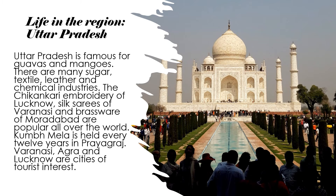Uttar Pradesh is famous for guavas and mangoes. There are many sugar, textile, leather and chemical industries. The Chikankari embroidery of Lucknow, silk sarees of Varanasi and brassware of Moradabad are popular all over the world. Kumbh Mela is held every 12 years in Prayagraj. Varanasi, Agra and Lucknow are cities of tourist interest.